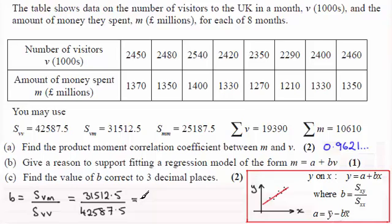So working this out then on your calculator gives 0.7399 and so on. And if we give this to three significant figures, this is going to be equal to 0.740 to 3 SF.